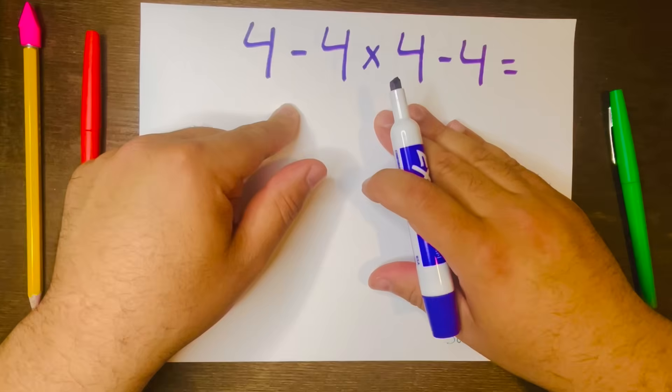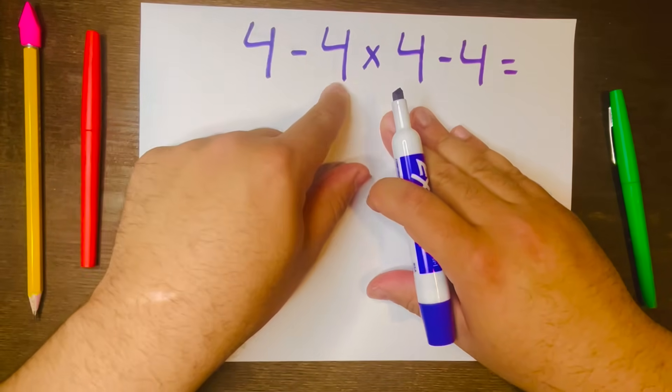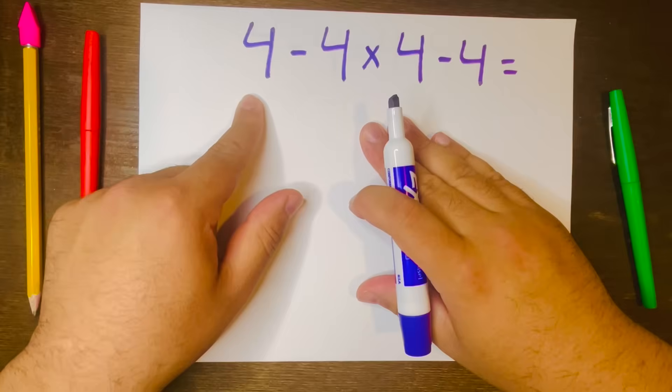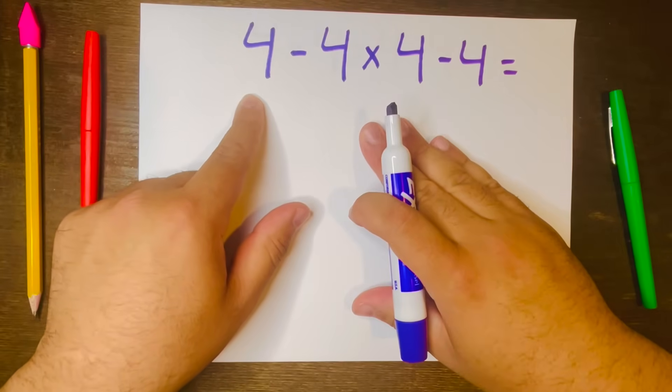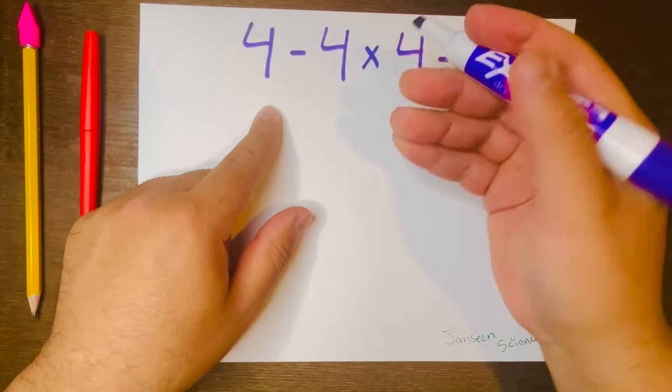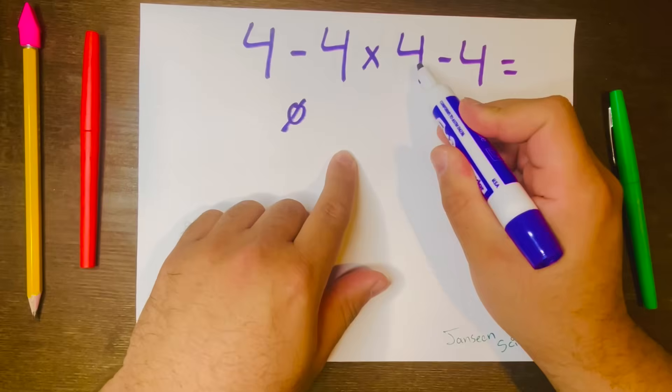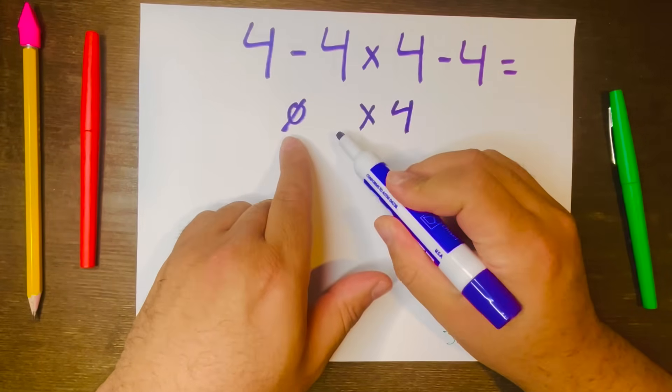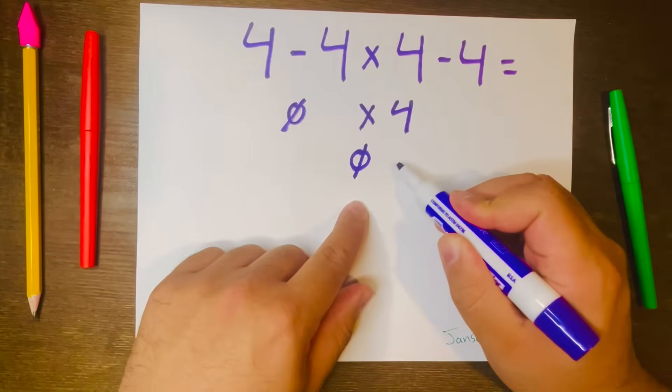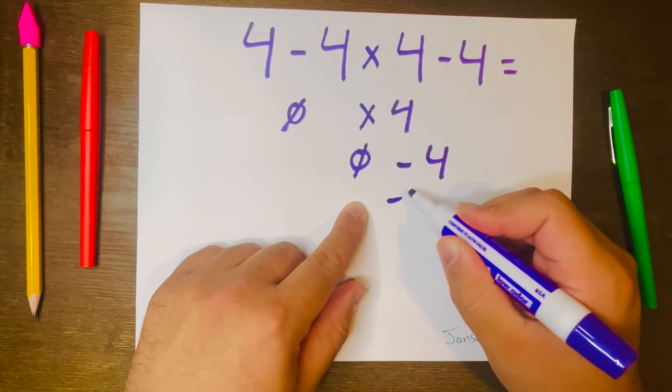Let's begin solving 4 minus 4 times 4 minus 4. Now some people will make this mistake of solving this problem by starting with 4 minus 4 which equals 0, and then they multiply it by this 4. 0 times 4 gives you 0, and they'll bring down the minus 4, and 0 minus 4 gives you negative 4.